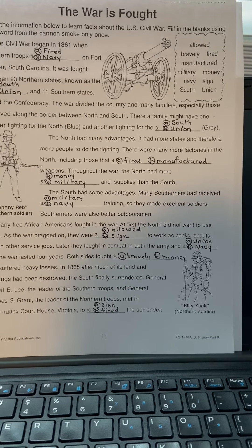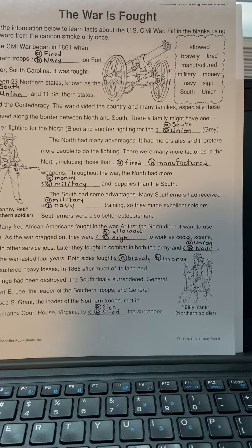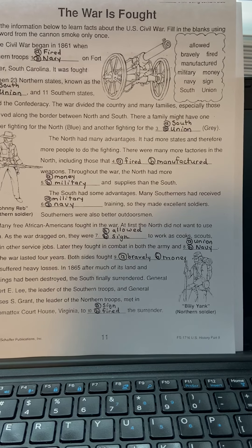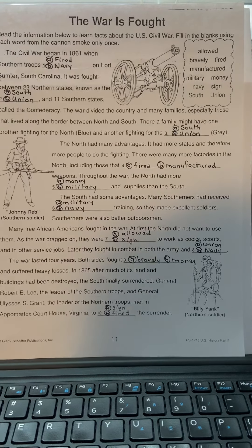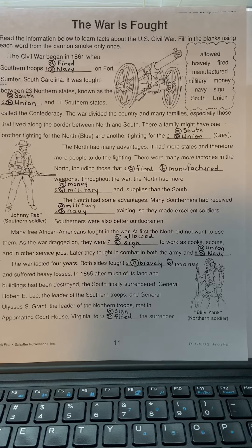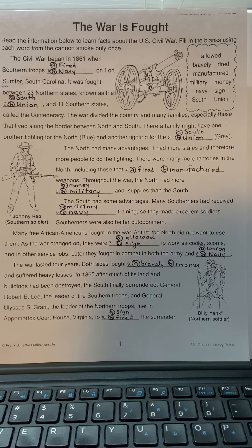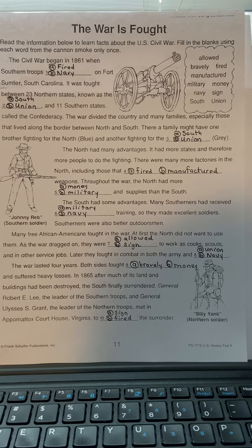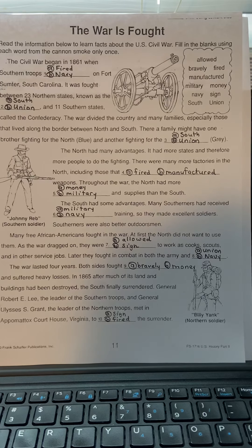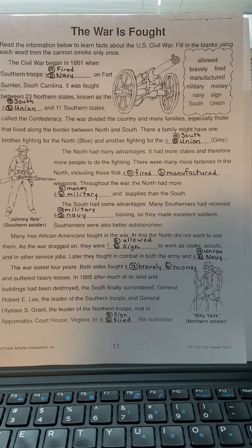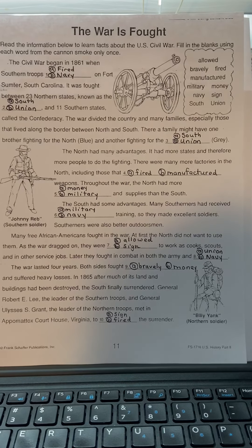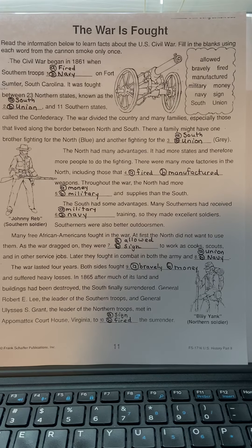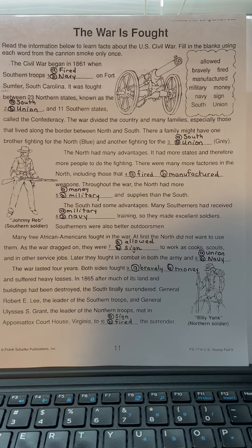The south had some advantages. Many southerners had received military training, so they made excellent soldiers. Southerners were also better outdoorsmen. Many free African Americans fought in the war. At first the north did not want to use them. As the war dragged on, they were allowed to work as cooks, scouts, and in other service jobs. Later they fought in combat in both the army and navy.